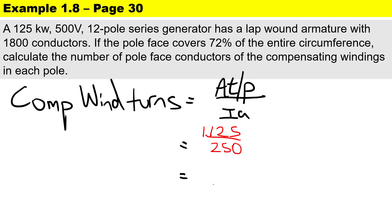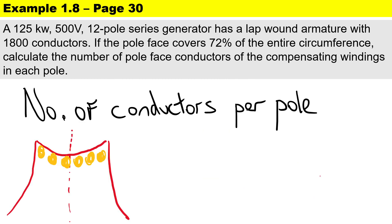The last step is to work out the number of conductors per pole. We take the compensating winding turns per pole of 4.5 and multiply by the two sides of the pole face. Therefore there are nine conductors per pole.